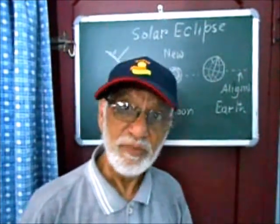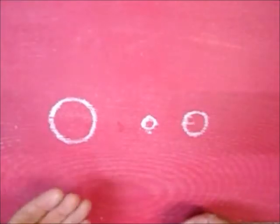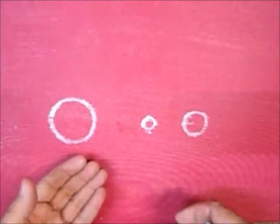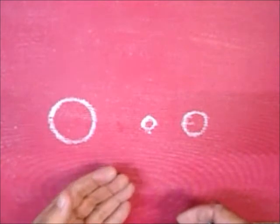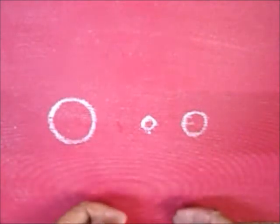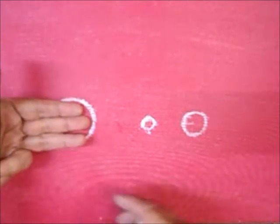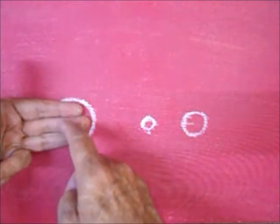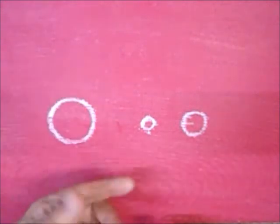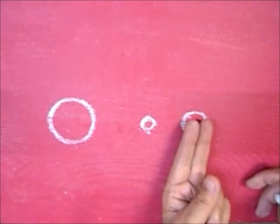Now we will learn more about solar eclipse using a ray diagram. To draw the ray diagram, draw three circles. The first circle should have a diameter of three finger widths, the second one should be one finger width, and the third one should be two finger widths.